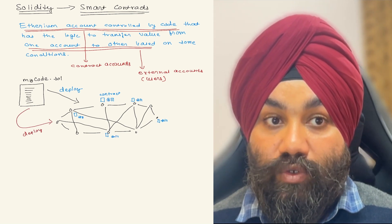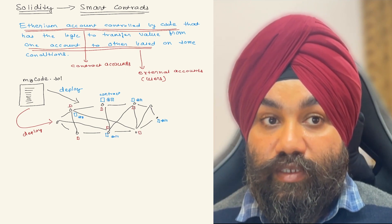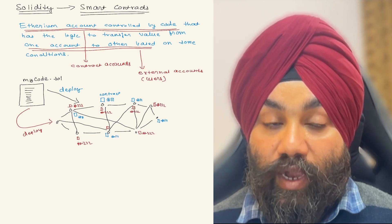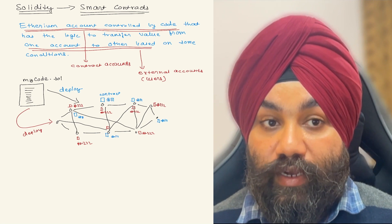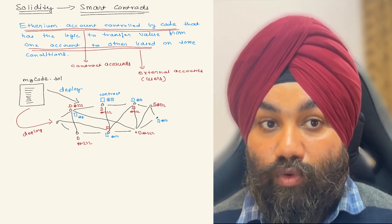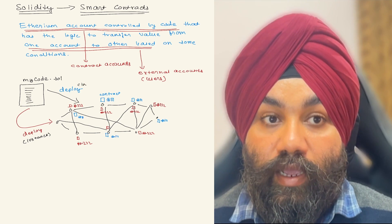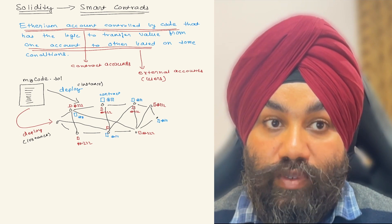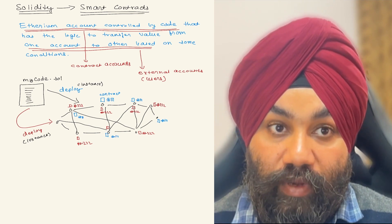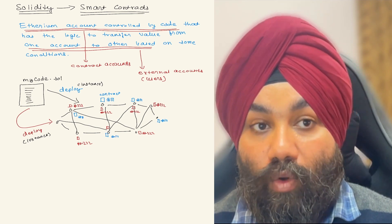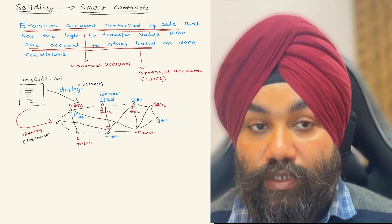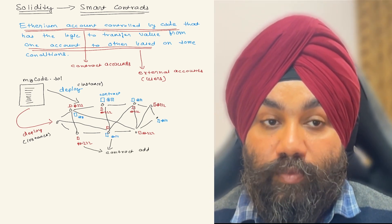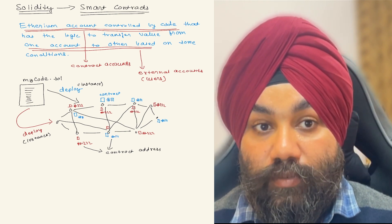If we redeploy this code again, it gets replicated on all the nodes but receives a new account address — for example, hash#2. You can associate this with creating objects in Java: whenever you create objects of a Java class, new instances are created. Similarly, when you deploy your Solidity smart contract on the Ethereum blockchain, you deploy new instances of the smart contract, each with its own contract address.